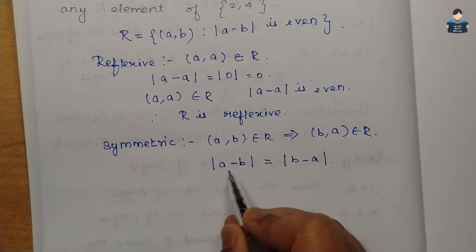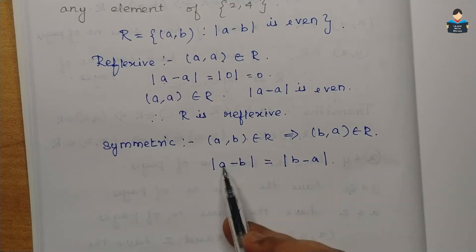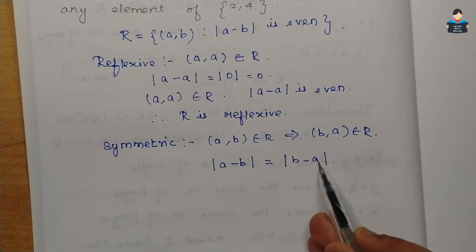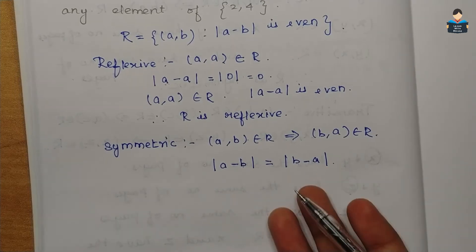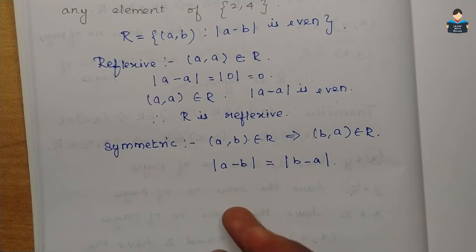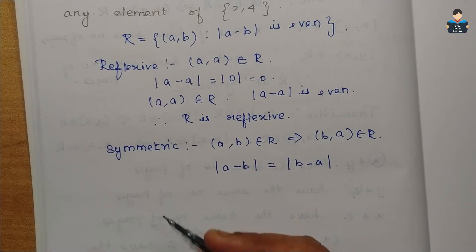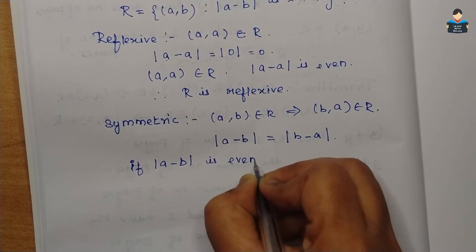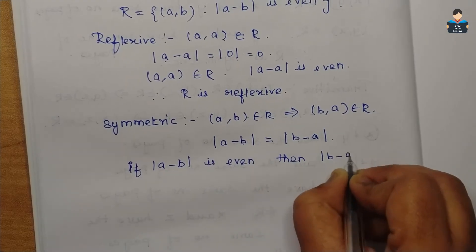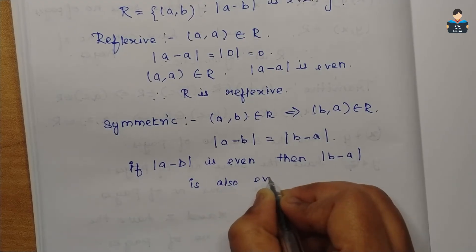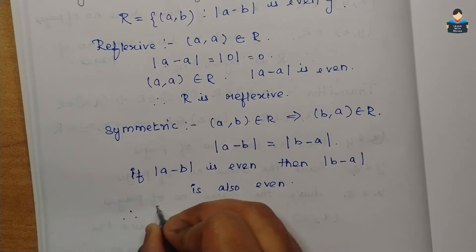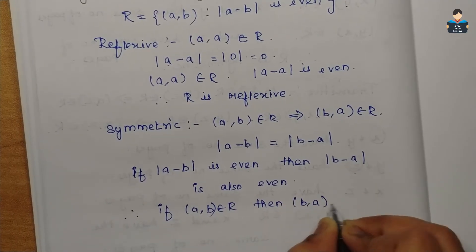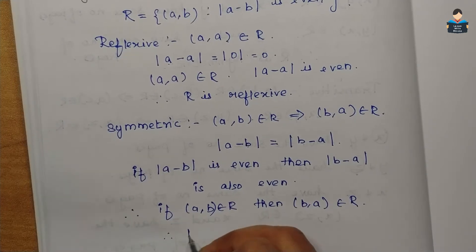For example, 2 minus 4 is equal to minus 2, and modulus of minus 2 is equal to 2. Similarly, 4 minus 2 is equal to 2. So if modulus of a minus b is even, then modulus of b minus a is also even. Therefore, if (a, b) belongs to R, then (b, a) also belongs to R. Therefore, R is symmetric.